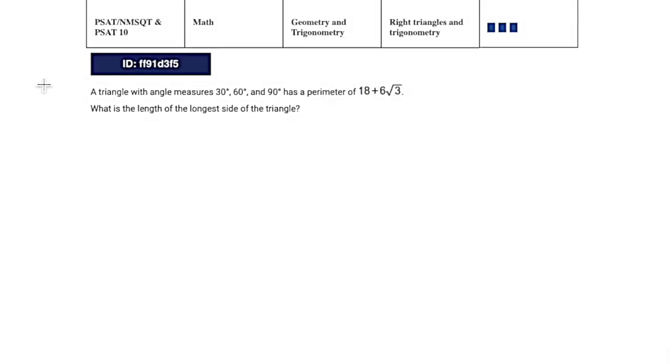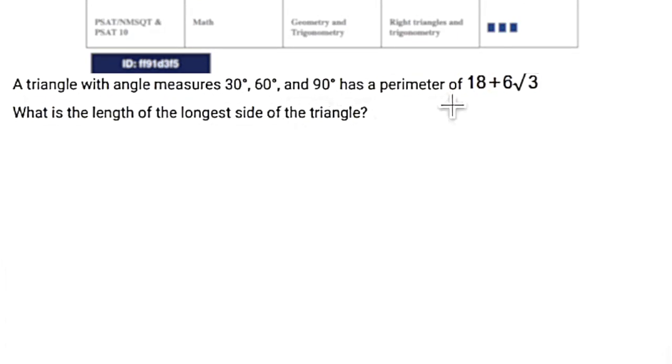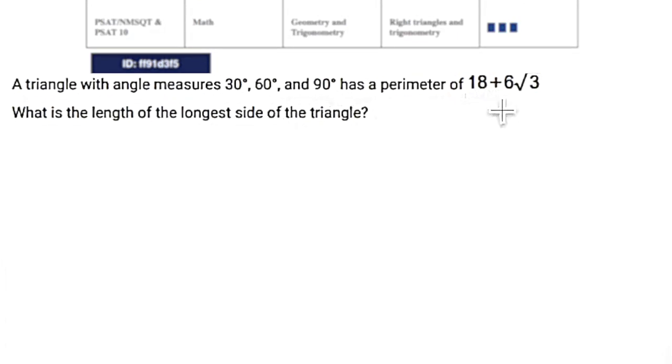So let's look at this one. A triangle with angle measures 30, 60, and 90 has a perimeter of 18 plus 6 root 3. What is the length of the longest side of the triangle?